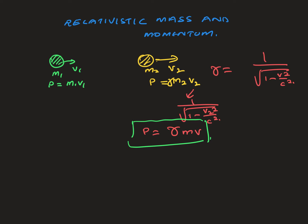Looking at the formula, 1 minus v squared over c squared: when the speed increases and gets closer to c, the speed of light, if it reaches c, this part becomes 1 minus 1, which is 0. So it's 1 divided by 0, which goes to infinity. So what happens to the momentum? Momentum would be infinity, and that's not possible — that's the reason we can't exceed the speed of light.